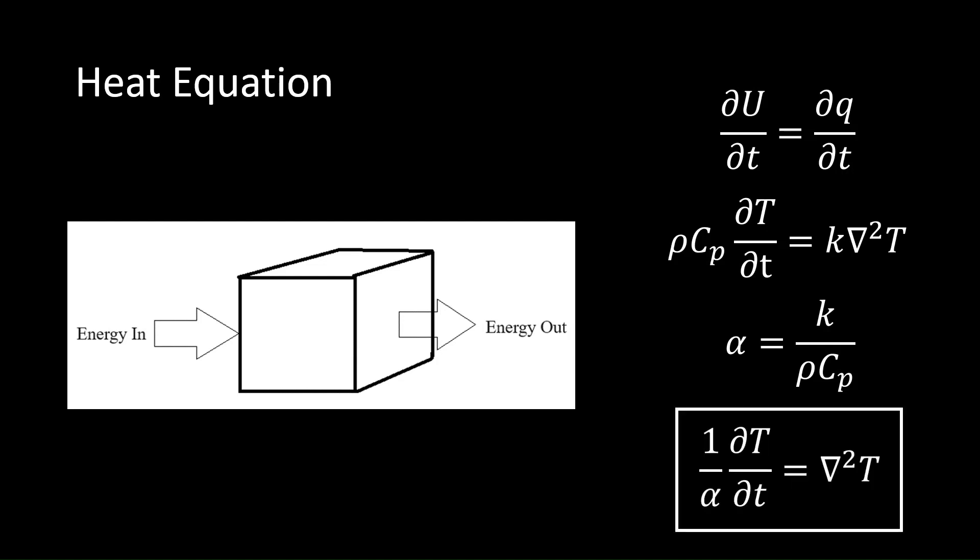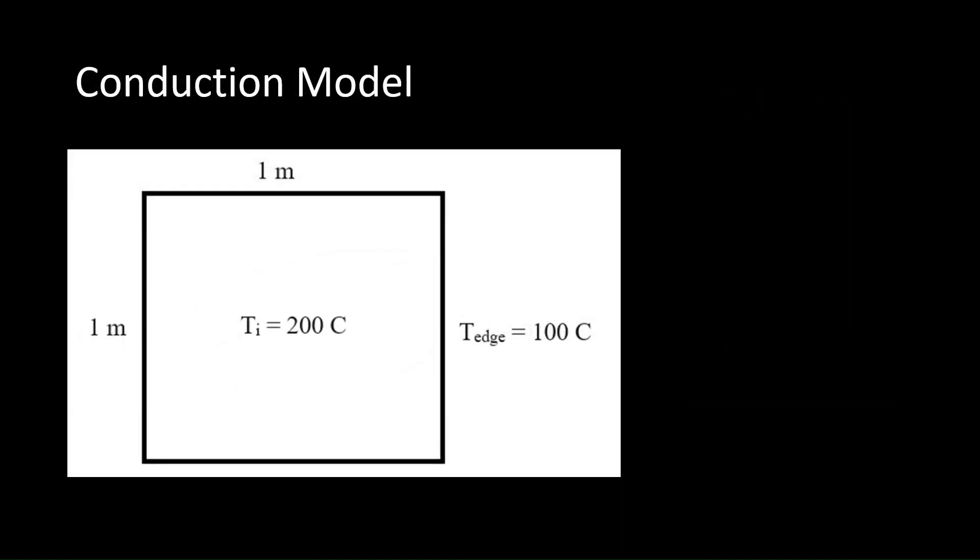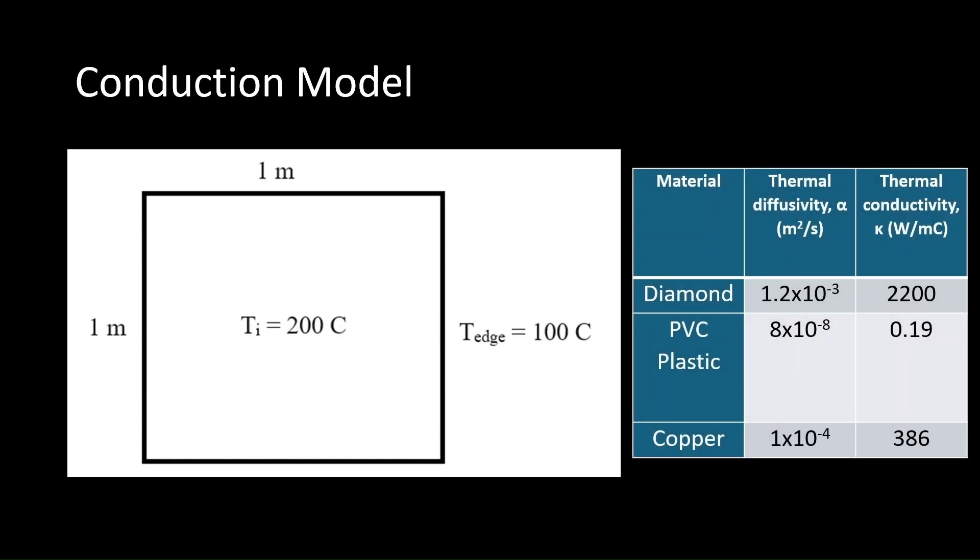Let's simulate transient heat transfer across a solid square plate to model this concept. For the conductive heat transfer simulation, we maintain the boundaries of the plate at 100 degrees Celsius, and start with an initial temperature of 200 degrees Celsius, as shown. To determine the effect different materials have on the transfer, we simulate these conditions for PVC plastic, copper, and diamond.